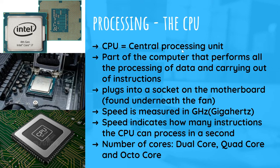CPU — Central Processing Unit: The part of the computer that performs all the processing of data and carrying out of instructions. It plugs into a socket on the motherboard and is found beneath a cooling fan. Speed is measured in gigahertz, indicating how many instructions the CPU can process per second. The number of cores can be dual core, quad core, or octa core — that is 2, 4, or 8 cores.